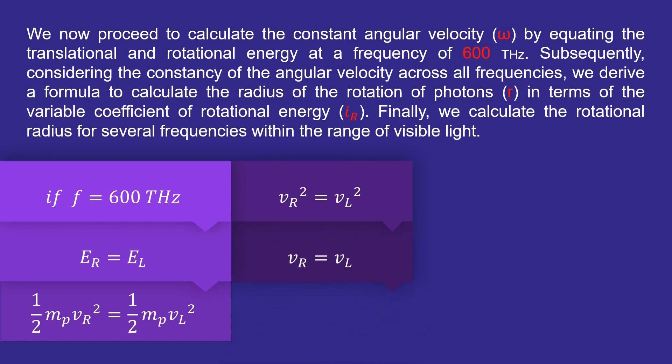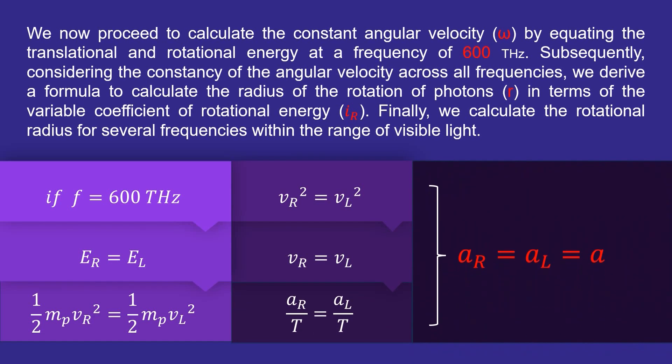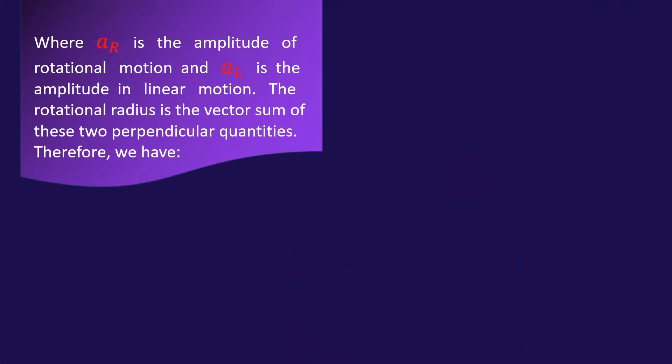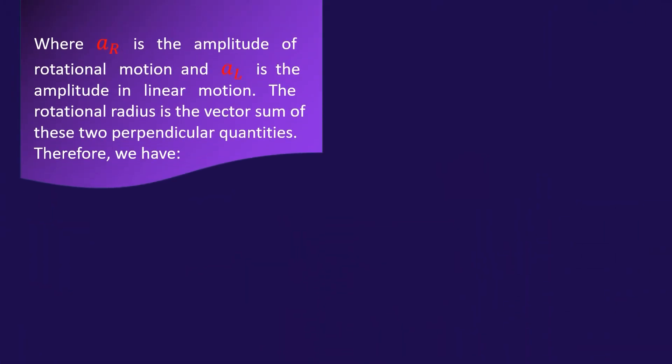Finally, we calculate the rotational radius for several frequencies within the range of visible light, where a of r is the amplitude of rotational motion and a of l is the amplitude in linear motion. The rotational radius is the vector sum of these two perpendicular quantities.